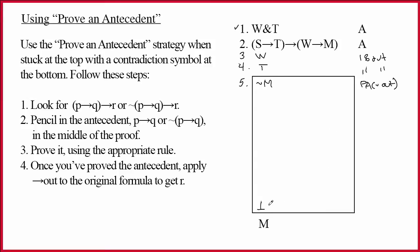Now we go to the bottom though and we have a contradiction symbol. Well, that's the situation when we know we're going to have to be a little creative. And the first thing you should think about is this strategy that I call Prove an Antecedent. Let's look at the steps.